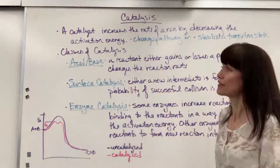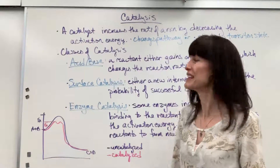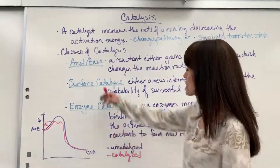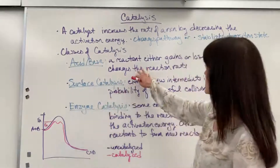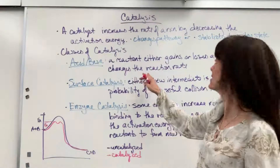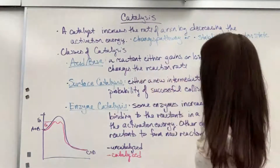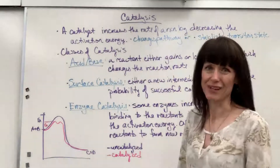As I go through these classes of catalysis, you're going to see these two things: the activation energy is decreased by either changing the pathway that reactants break and products are formed, or by stabilizing the transition state. There are three classes of catalysis to be familiar with. The first one is acid-base catalysis — a reactant either gains or loses a proton, which changes the reaction rate.